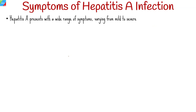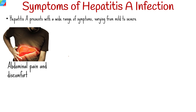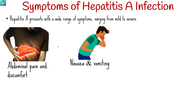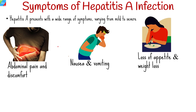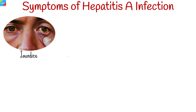Hepatitis A presents with a wide range of symptoms, varying from mild to severe. These include abdominal pain and discomfort, often in the upper right quadrant where the liver is located; nausea and vomiting; loss of appetite leading to unintended weight loss; fatigue and weakness; and jaundice, which is the yellowing of the skin and eyes due to liver dysfunction. Jaundice occurs when the liver is unable to process bilirubin, a waste product from the breakdown of red blood cells.